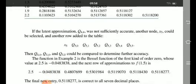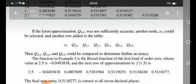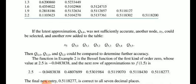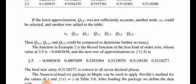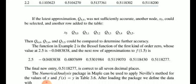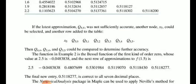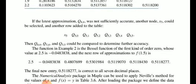We continue with x5, computing Q50, Q51, Q52, Q53, Q54, Q55 — three values are complete. The test approximation Q44 was not sufficiently accurate, so Q54 gives a better row approximation. The value 2.5 is used for Q54.